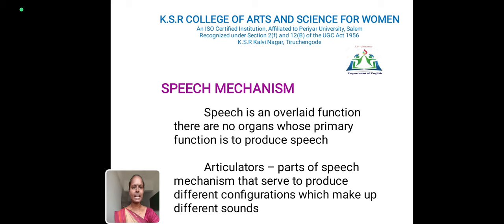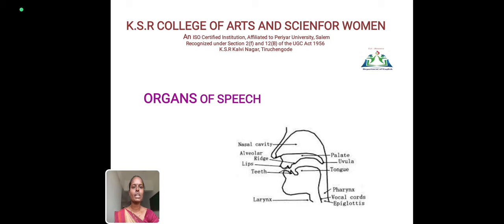Speech Mechanism is an overlaid function. There are no organs whose primary function is to produce speech. Articulators are parts of the speech mechanism that serve to produce different configurations which make different sounds. Here is a picture showing this.